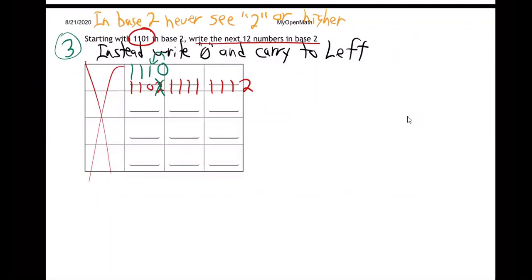So I can't write the 2. Instead, I write a 0 and carry, don't I? So what does it become? 1120. But hold on. I wrote another 2. You can't write a 2 anywhere, even in the next place over.